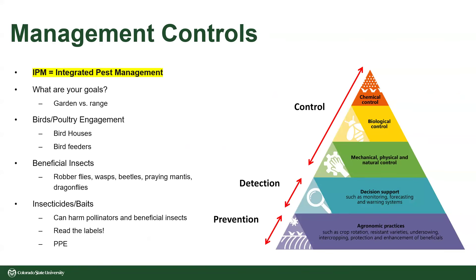Most of you have probably heard of integrated pest management. It's a triangle ranging from least to most impactful: prevention in the off-seasons, decision support such as monitoring and forecasting, mechanical and physical controls, biological controls using parasitic insects, and chemical at the very top — because it affects everything. You also have to think about your goals: is it just your garden, or your entire rangeland? If you're not growing anything or raising livestock and they're just a nuisance, they will go away. But if you're trying to make a garden, they will devastate it.